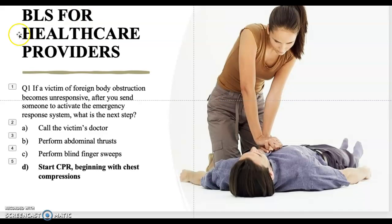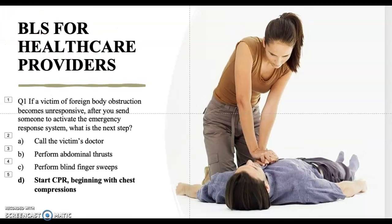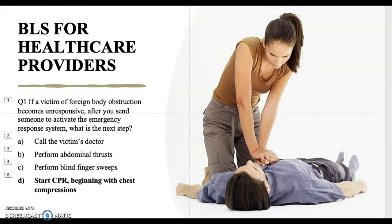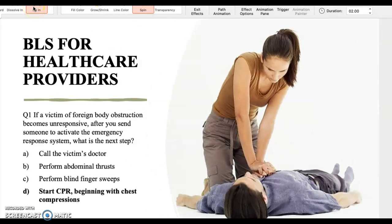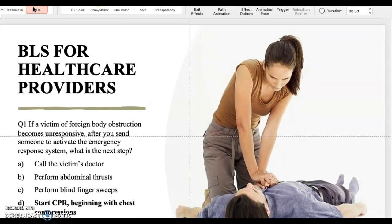Question number one states: if a victim of foreign body obstruction becomes unresponsive, after you send someone to activate the emergency response system, what is the next action? What are you going to do after you send someone to call 911? What is your next step?